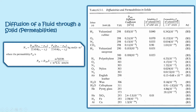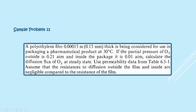This is how you use the permeability table to suggest a packaging material. Among choices of nylon, polyethylene, and rubber — rubber should never be used for pharmaceuticals — nylon is the best choice because its permeability for oxygen is lesser than that of polyethylene. We now go to the last sample problem on solids.